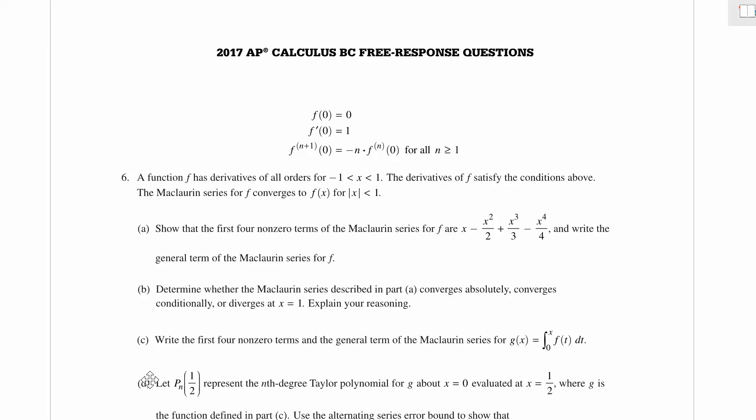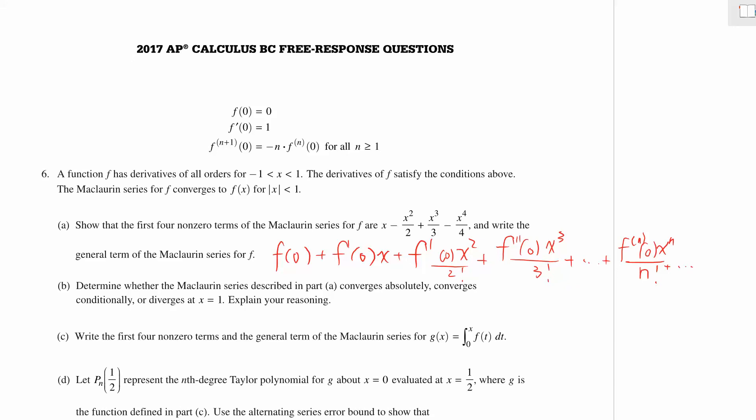Let's look at question number six. We are given the nth derivatives for a function f and we are asked to find the first four and the general term of the Maclaurin series for f. The Maclaurin series is the Taylor series centered at 0, so it will look something like this. Since we already are given how to find every derivative of f, it should be pretty easy.